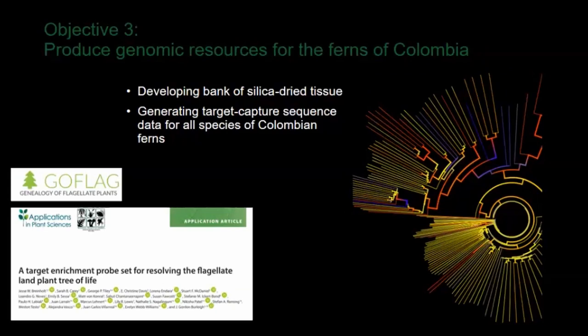The third aim of our project is to produce genomic resources for the ferns of Colombia. DNA sequence data are critical for resolving taxonomic problems and placing Colombian fern diversity in an evolutionary context, but these data are lacking for most Colombian fern species. As part of the project, we're developing a silica-dried tissue bank and generating target capture sequence data for all species of Colombian ferns. We're using the target capture probe set developed by the GoFlag project — similar to the Angiosperm 353 — a probe set targeting 451 loci from 248 single-copy or low-copy nuclear genes across flagellate plant lineages.